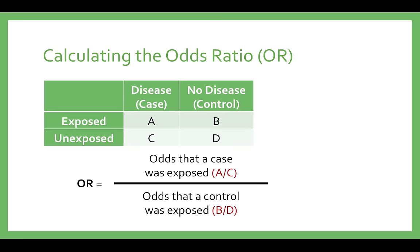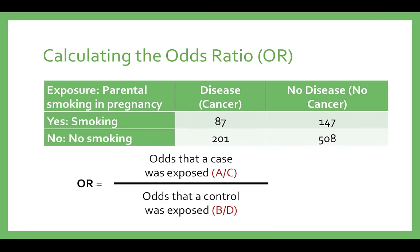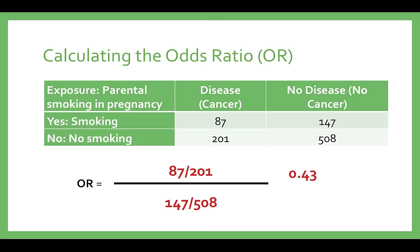Here is the calculation for the odds ratio. It is the same as the cross product using the 2x2 table: A times D divided by B times C. Let's look at a real-life example — a case-control study of children with leukemia compared to children without leukemia, which looked to see whether history of parental smoking was associated with cancer. Here is the 2x2 table created. To get the odds ratio, we divide the number of kids with parental smoking by the number of kids without parental smoking in the cancer group for an odds of 0.43. This is divided by the odds of parental smoking in the non-cancer group, 0.29, for an odds ratio of 1.48. Notice that this is different from the relative risk equation because we don't use total exposed or total unexposed anywhere in the equation.